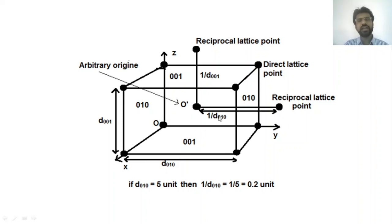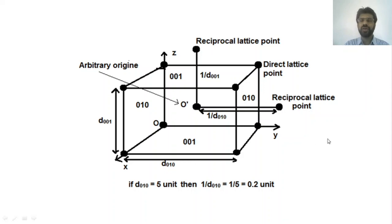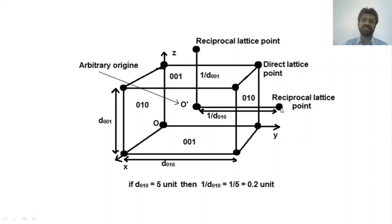Similarly, for the upper and lower planes that are parallel with each other, draw the normal from this arbitrary origin passing through the 001 plane, and terminate it at the distance equal to the reciprocal of the interplanar distance. That gives the reciprocal lattice point. In this way, for any type of crystal with many different planes, we get different reciprocal lattice points. The corners of the cube act as the direct lattice, while these points act as the reciprocal lattice. We can draw reciprocal lattice points for any type of crystal, and the reciprocal lattice represents the set of parallel planes.